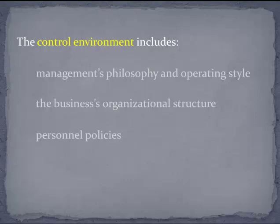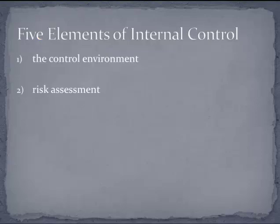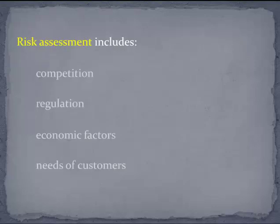The next element is risk assessment — identifying where a company might lose money, where business information might be inaccurate, or where employees may not comply with laws and regulations. Risk assessment includes competition: how competitive a marketplace is the company in? If it's a highly competitive marketplace, employees may have incentive to lie or cut corners. If it's not competitive, there will probably be less incentive, meaning less risk associated with that.